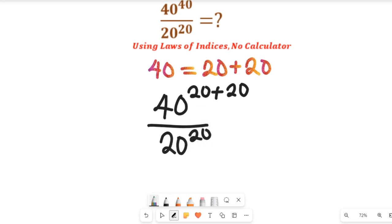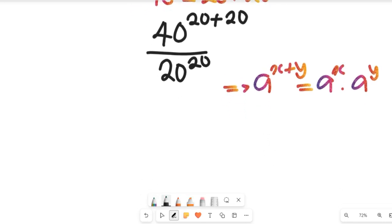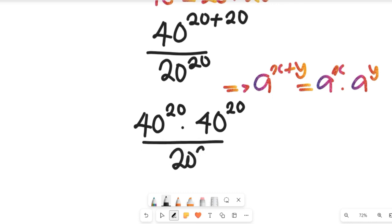Now recall one law of indices: if you have a to the power of x plus y, this can be equal to a to the power of x multiplied by a to the power of y. So if you have that, the numerator will now become 40 to the power of 20 multiplied by 40 to the power of 20, and this will be divided by 20 to the power of 20.